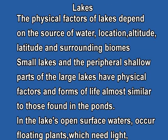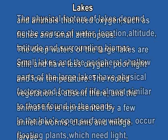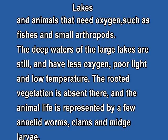The physical factors of the lake depend upon the source of water, location, altitude, latitude, and the surrounding biomes. Small lakes and the peripheral shallow parts of large lakes have physical factors and forms of life almost similar to those found in ponds. In the lake's open surface water, floating plants need light, and animals like fishes and small arthropods depend upon them. Deep waters of large lakes are still and have less oxygen, poor light, and low temperature, so vegetation is comparatively very low. Animal life is represented by few annelid worms, chironomid larvae, and midge clouds.